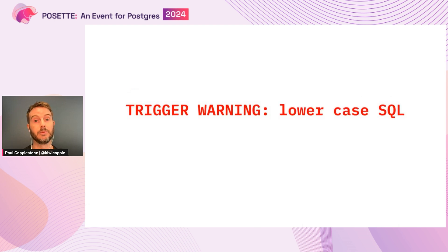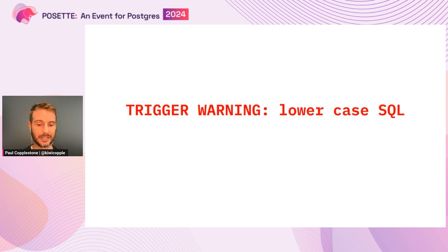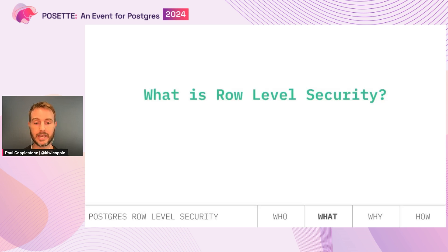Before I get into it, just a trigger warning: I use some lowercase SQL in this. That's largely because the profile of customer we were targeting in the early days was not so much a database developer, so we decided to consolidate on lowercase to make it more approachable. If you like uppercase SQL, I'm sorry. So, what is Row Level Security?